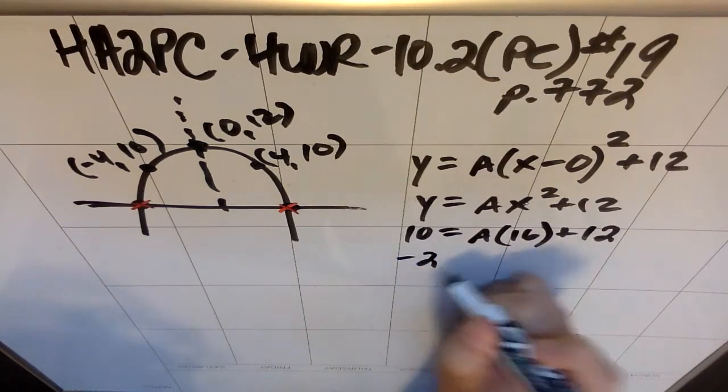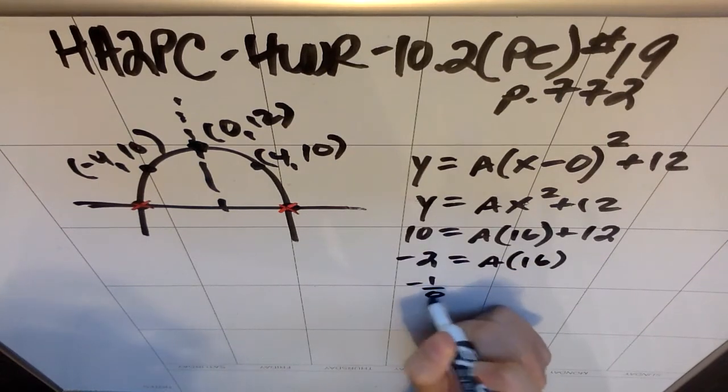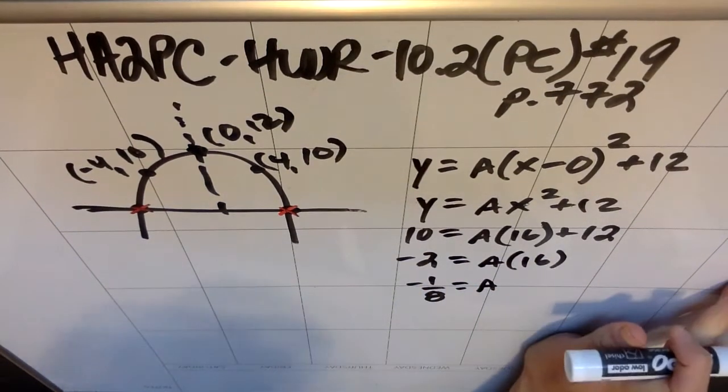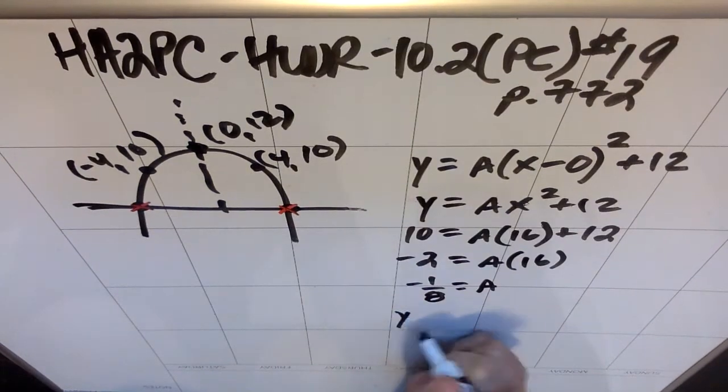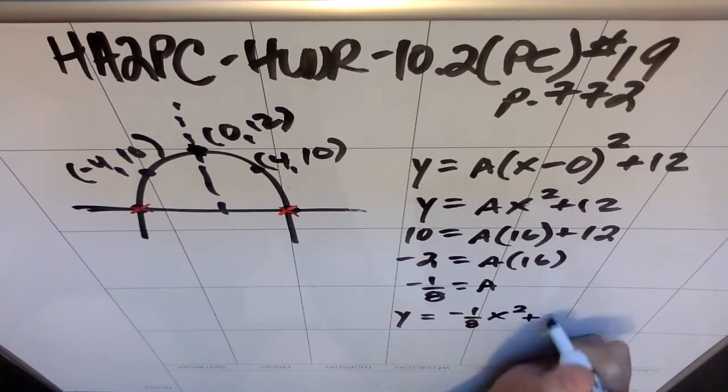So if I subtract the 12 over, negative 2 equals a times 16, so negative 1/8 is my a. So essentially I end up with an equation that is y equals negative 1/8 x² plus 12.